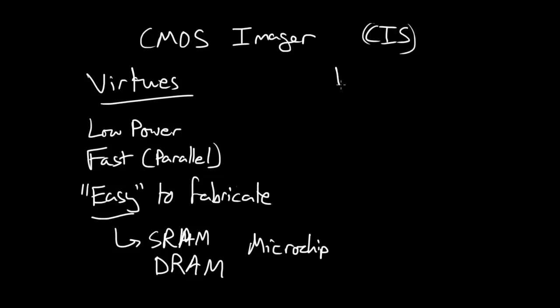What are the vices? Well, the main vice is that it's high noise, high noise. And that comes from the fact that every pixel has its own amplifier. Lots of amplifiers.